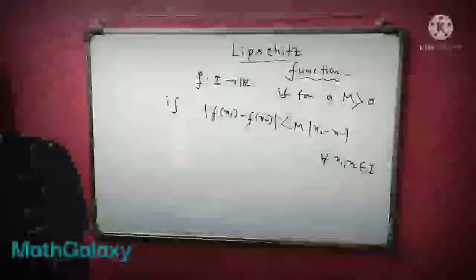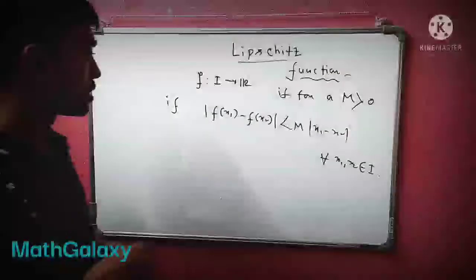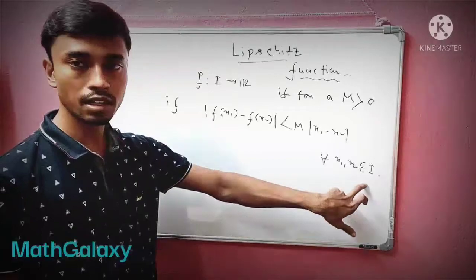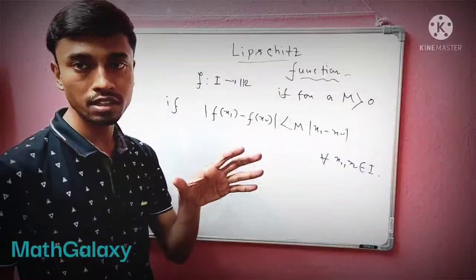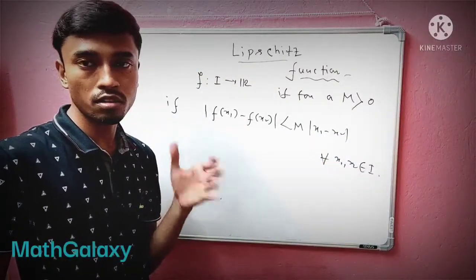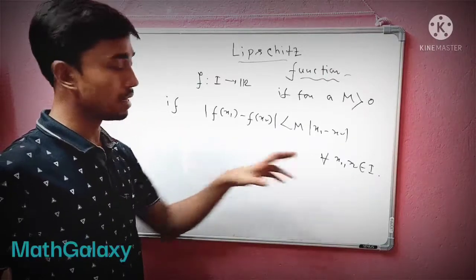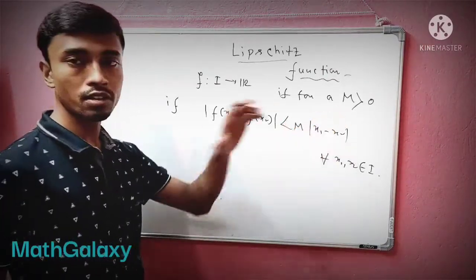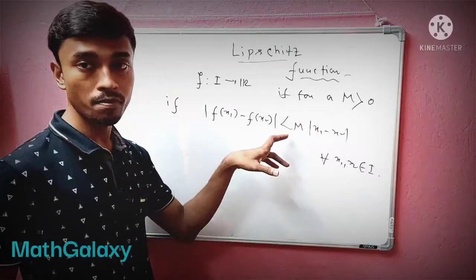So you took any two points from the domain. The domain is interval I - it might be closed bounded or it might be open bounded, but it's an interval. If you can find this kind of condition for a particular number m - understand this is very important - you basically choose this m at first.